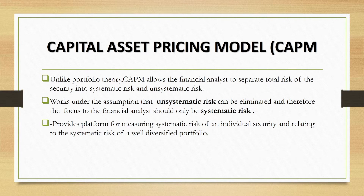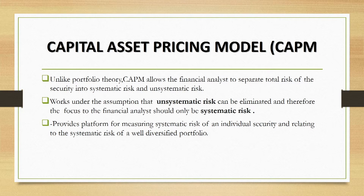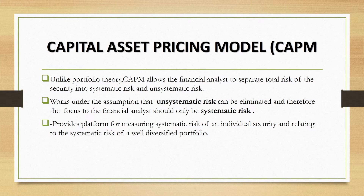So the scholars of later days developed what we call the Capital Asset Pricing Model. Unlike the portfolio theory, which analyzed the total risk exposure, the CAPM says you don't need to analyze the total risk exposure. You should be able to narrow down to what we normally call specific risk. The portfolio theory said the total risk exposure of an asset can be divided into two: systematic and unsystematic.